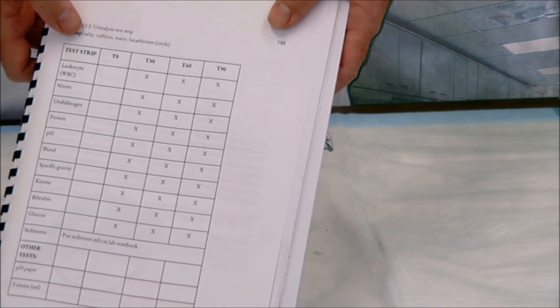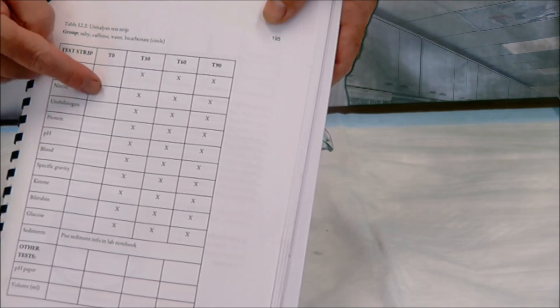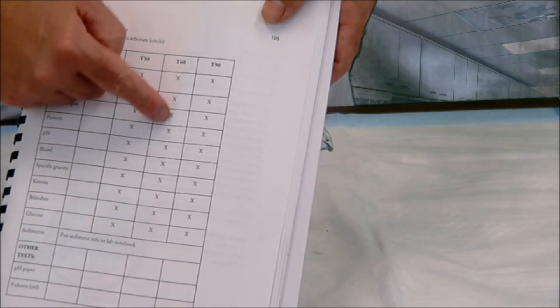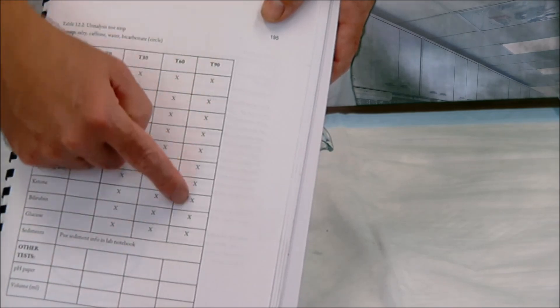So again, your initial urine sample gets recorded here at T0 times zero, the second one at T30, the third one at T60, and the last one at T90.